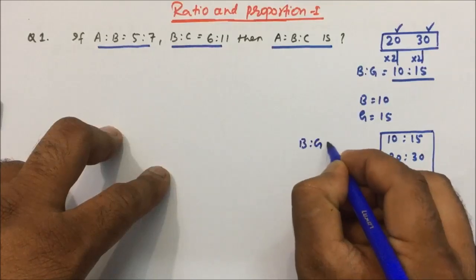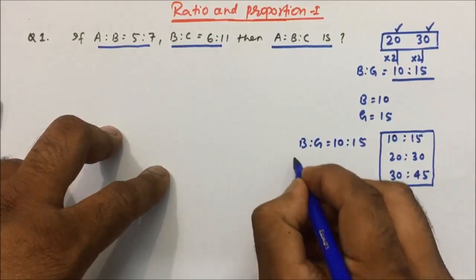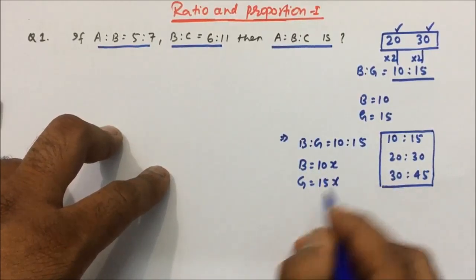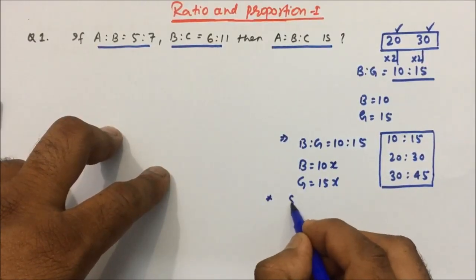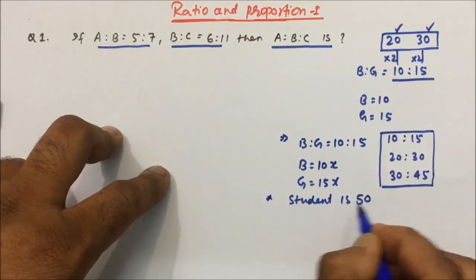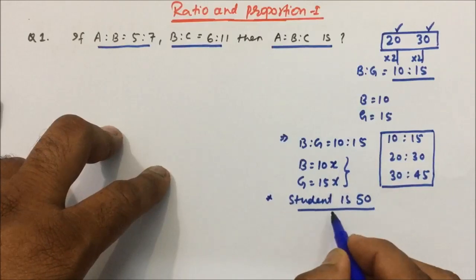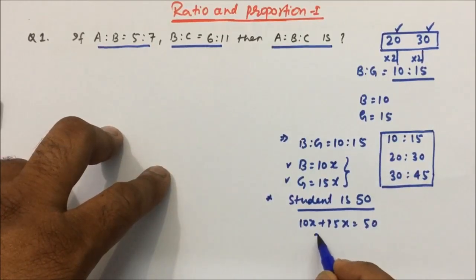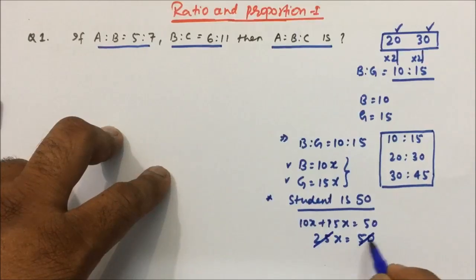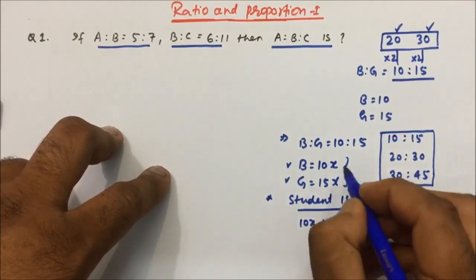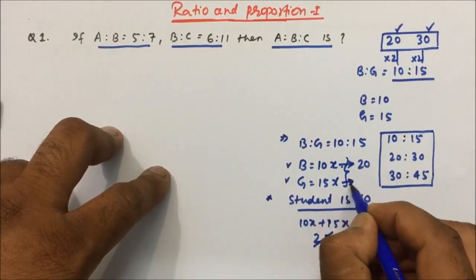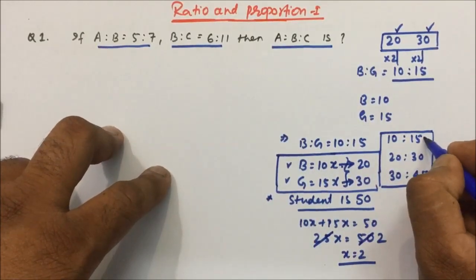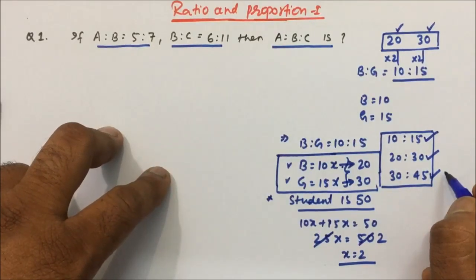So if boys to girls ratio is given as 10 is to 15 and we have to write in terms of value, then we write boys as 10x and girls as 15x. Now suppose a statement says the total number of students is 50. So 10x plus 15x equals 50, which gives 25x equals 50, so x equals 2. Therefore, number of boys is 10×2 = 20 and number of girls is 15×2 = 30. But if they give it in ratio form, those are not the actual counts.